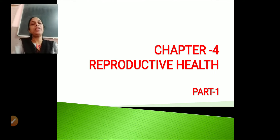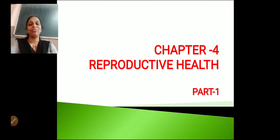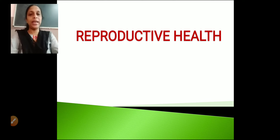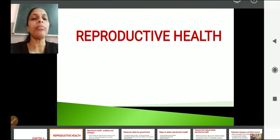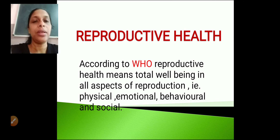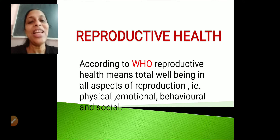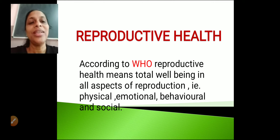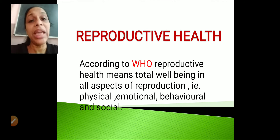If that is the definition for health, what would be the definition for reproductive health? According to the World Health Organization, reproductive health means total well-being in all aspects of reproduction — that is, physical aspect, emotional aspect, behavioral aspect and social aspect of a person.